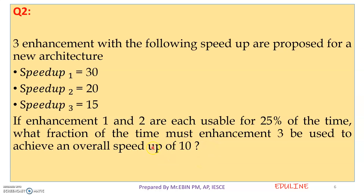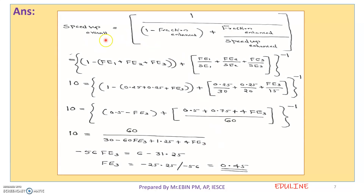We need to achieve a speedup of 10, so we calculate the fraction for enhancement 3. Enhancement 3 has a speedup of 3. The equation is: 1 divided by [(1 minus fraction enhanced) plus (fraction enhanced divided by speedup enhanced)]. We set this equal to 1 divided by 10 and solve for the fraction of enhancement 3.